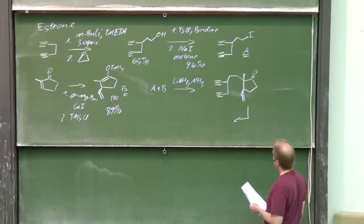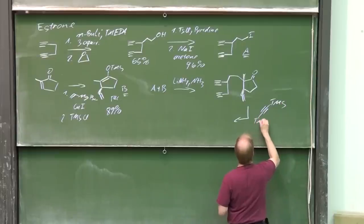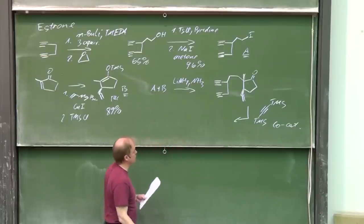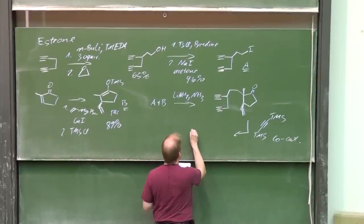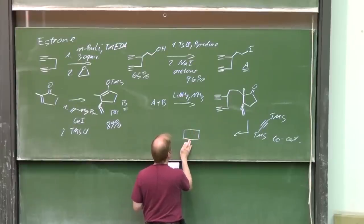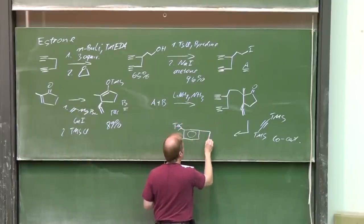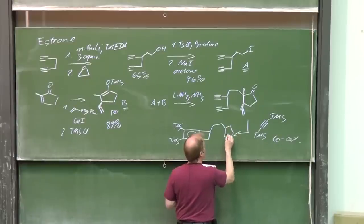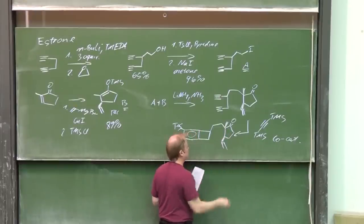Now it is set up for the cyclotrimerization reaction. This trimethylsilylacetylene and the cobalt catalyst. Again, reaction racemic.